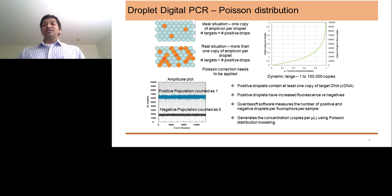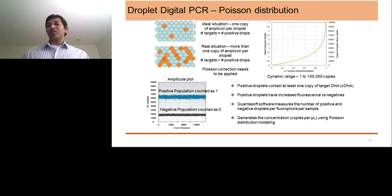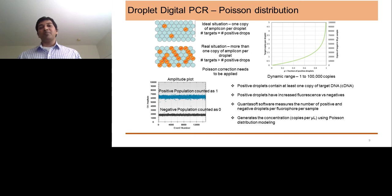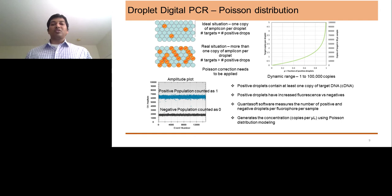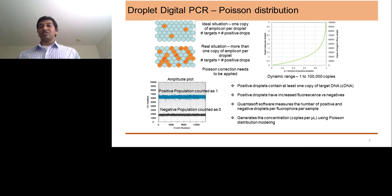Digital Droplet PCR has a high dynamic range, meaning it can go even to a very low copy number — it can read around one copy per reaction. Once the Droplet PCR is complete, you get an amplitude plot with a positive and a negative population. The negative population is counted as zero and positive as one. Droplets with at least one copy are positive, and more than one copy is also positive. As you increase the template, the positive droplets have higher fluorescence intensity compared to negative, which is where you see the distribution of these two populations.